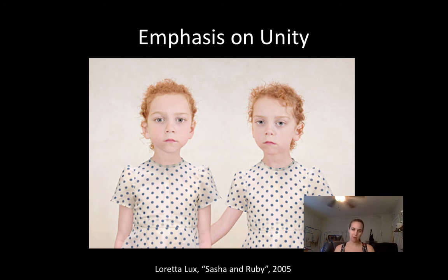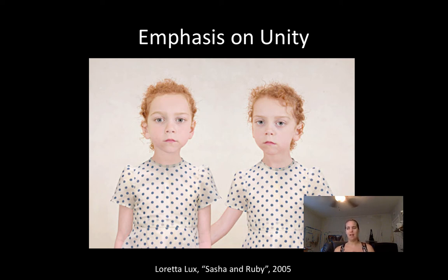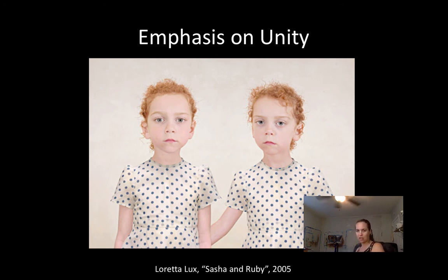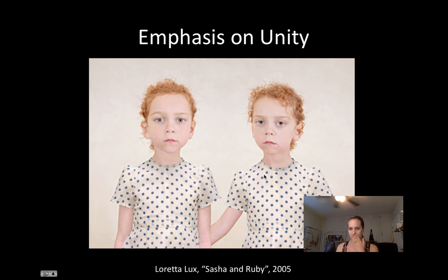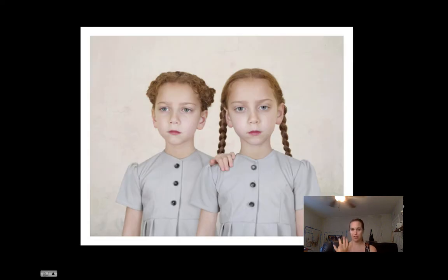You can have emphasis on unity, emphasis on variety, or equal amounts of both. Emphasis on unity means everything is very similar. In this image we have identical twins — they look very similar, very little difference between them, wearing the same dress. The only variety is that one arm comes out and one head is turned slightly differently, even though they're both looking straight at us.